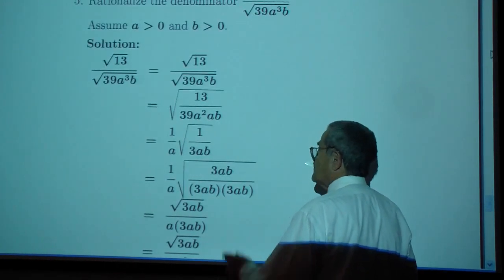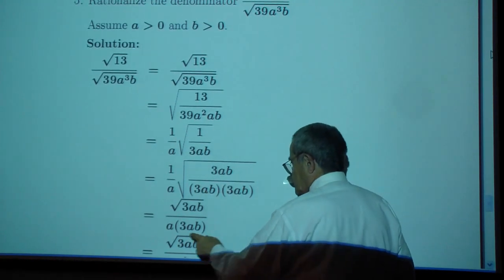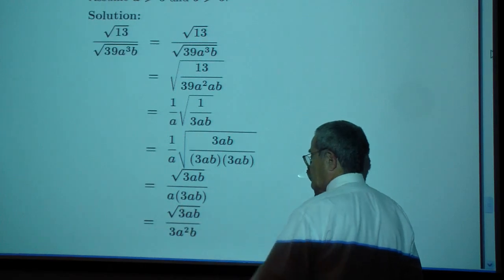The quantity squared in the denominator leaves you with three a squared b and you're stuck with the square root in the numerator.